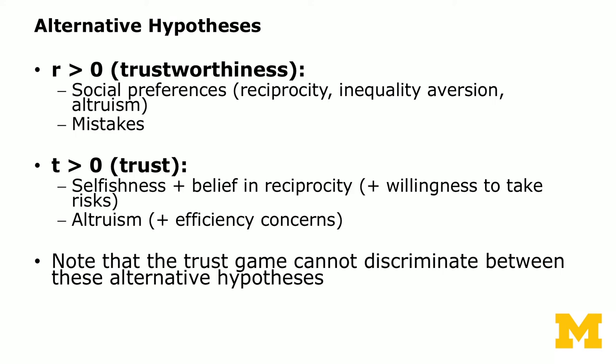The trust game by design cannot differentiate between these alternative hypotheses. If you observe someone returning a certain amount, you cannot say for sure whether it is reciprocity or a mistake. Similarly, when you observe someone pass a positive amount, you cannot differentiate the motive — it could be altruism, beliefs in efficiency, believing the other player will reciprocate, or willingness to take risks.